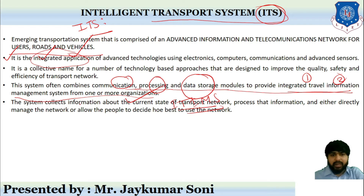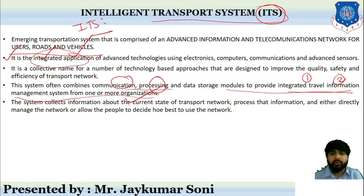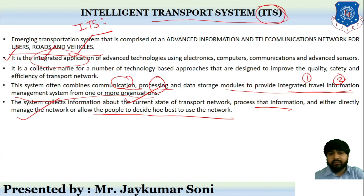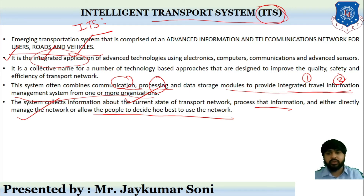This system collects information about the current state of transport — what is the existing situation of the current transportation network. It processes that information and either directly or indirectly manages it in a way that allows people to decide the best use of the network. The system collects present situation data and based on that collected information, it will either directly or indirectly manage the traffic.